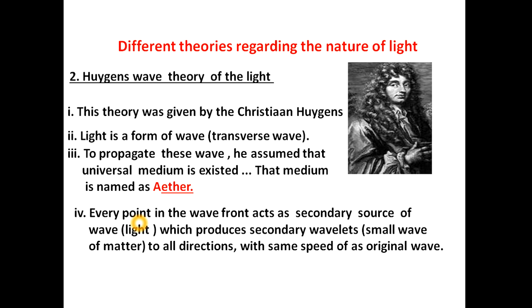A very important point in this theory is that every point on the wavefront acts as a secondary source of waves, which produces secondary wavelets in all directions. These secondary wavelets move with the same speed as the original wave. So in a light wave, if you take any one point, that point will act as a secondary source, producing secondary waves in all directions, traveling with the same speed as the original wave.